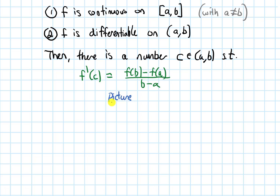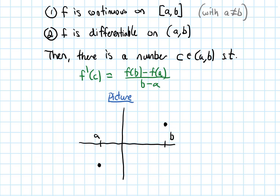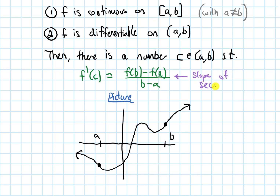Let's draw a picture to explain why this has to happen. I'll draw some axes, label a and b, and draw points at a and at b — those y-values don't need to be the same. Maybe at a the y-value is down here, and at b the point is up here somewhere. I'll draw a curve that goes something like this. The right-hand side of the MVT equation is a slope of a secant line — the slope of the secant line connecting the points when x is a and when x is b. Here's the secant line connecting those two points, drawn in with a dashed line.